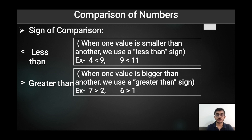For example, seven and two: seven is greater than two, so we write the greater than sign between seven and two. In the second example, six and one: six is bigger than one, so we write the greater than sign between six and one.